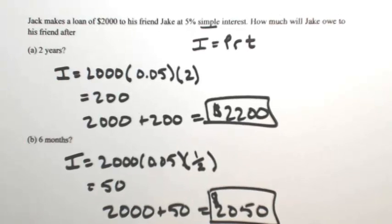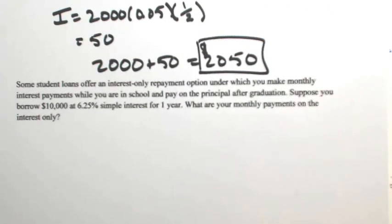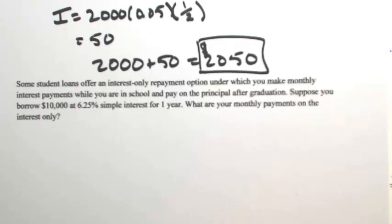Here, let's look at another example with simple interest. Some student loans offer an interest-only repayment option under which you make monthly interest payments while you're in school, and then pay only on the principal after your graduation. Suppose you borrow $10,000 at 6.25% simple interest for one year. What are your monthly payments if you're only paying on the interest?